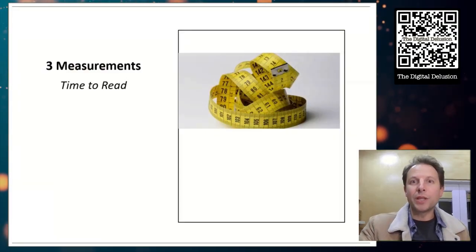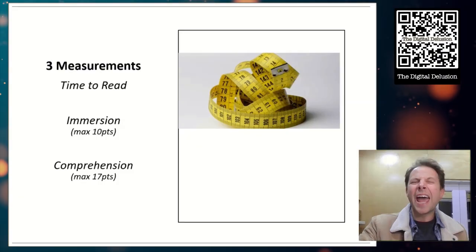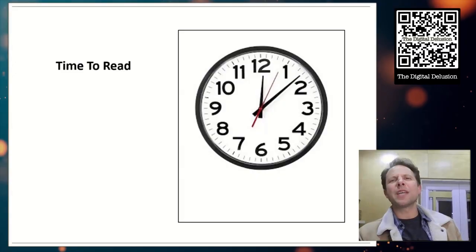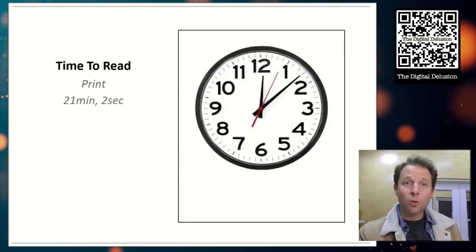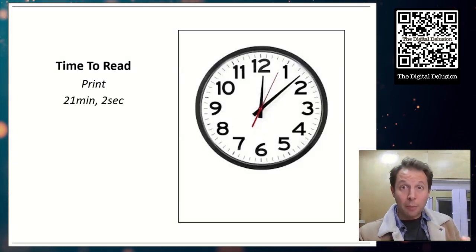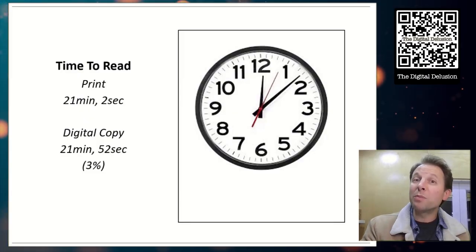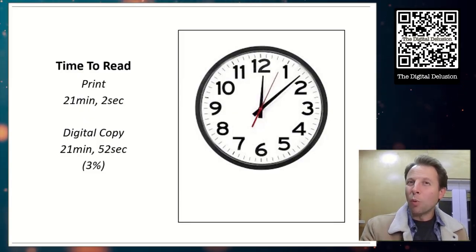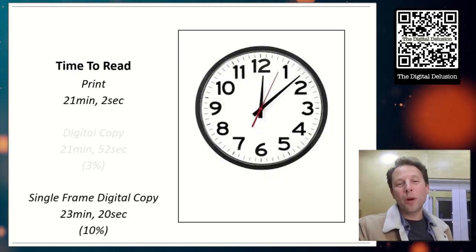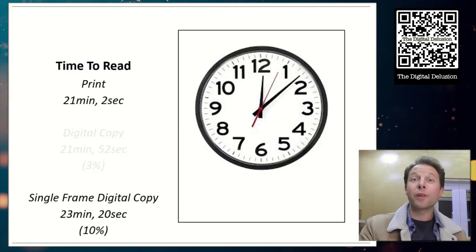They measured time to read. How long did it take you to read the comic books? Immersion, out of a score of 10, how deep did you get involved with the reading? And comprehension, out of a possible 17 points on a quiz the next day, how well do you remember what you read? So let's start here. Time to read. Kids who read the physical comic book took them about 21 minutes and two seconds to read. Cool. Kids who read the complete digital copy, so the materiality group took them about 21 minutes, 52 seconds. So about 3% longer, a little worse, but not huge. But what about those kids who looked at the single cells on the computer took them 23 minutes and 20 seconds, a full 10% longer than the kids reading the physical books. So that's one check for the cognitive mapping idea.